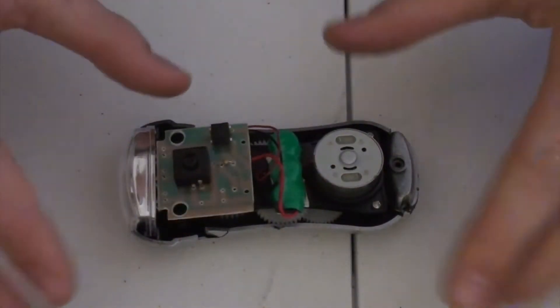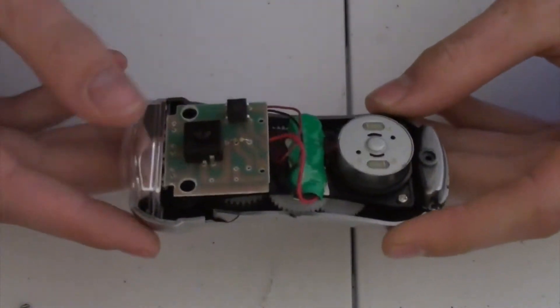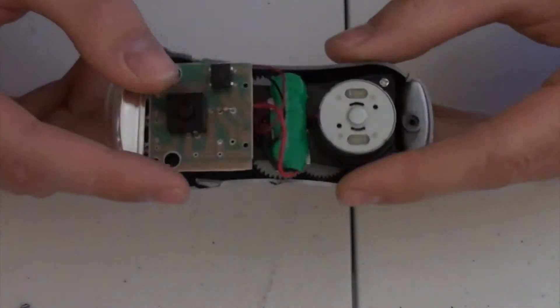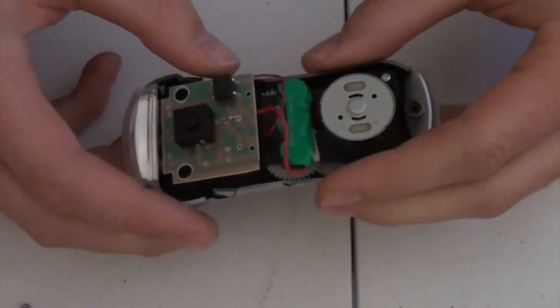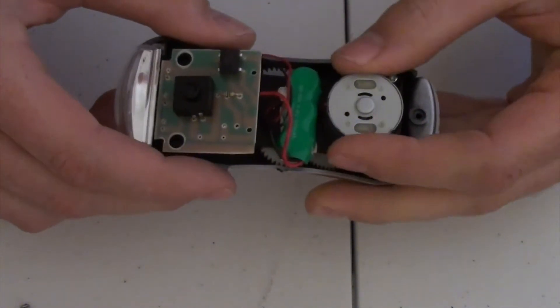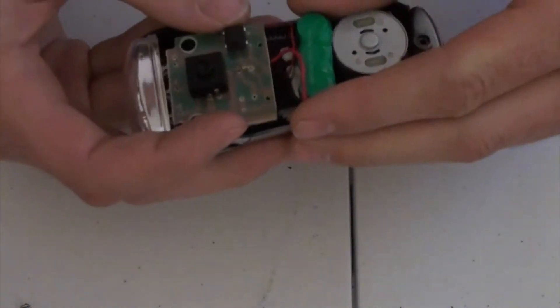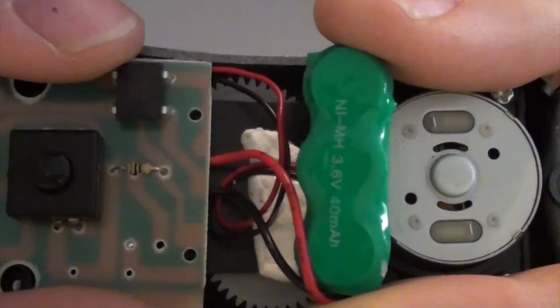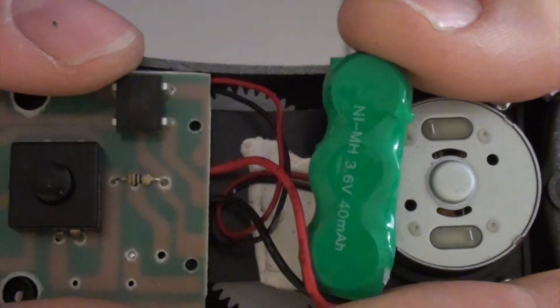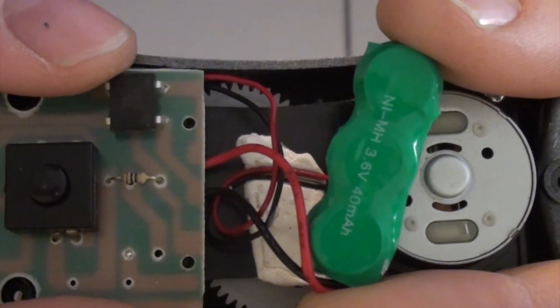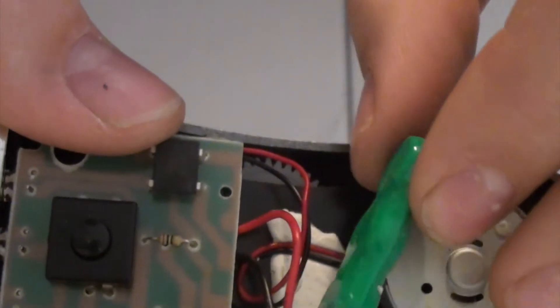So anyways, back to what we were doing. We've got our flashlight here. Looking at it, what we've got here, it looks like we've got a battery here, a little circuit board, and the motor to generate the electricity. So let's look a little closer at this. Let's see what kind of battery we've got here. It looks like we have a nickel metal hydride 3.6 volt battery. And it looks like it's got three cells in there.